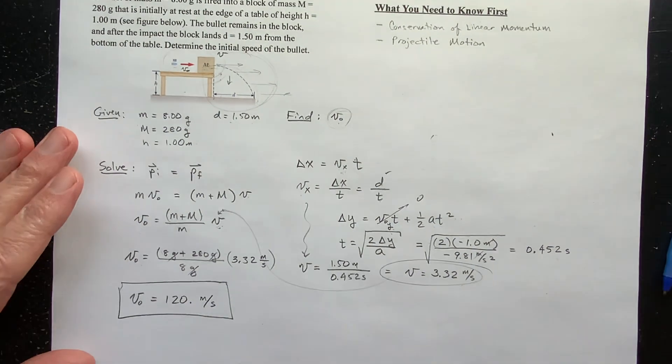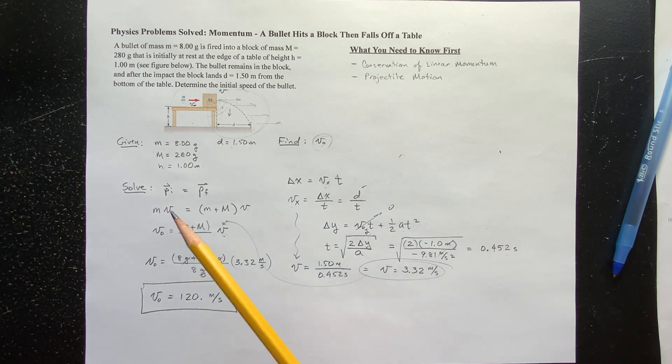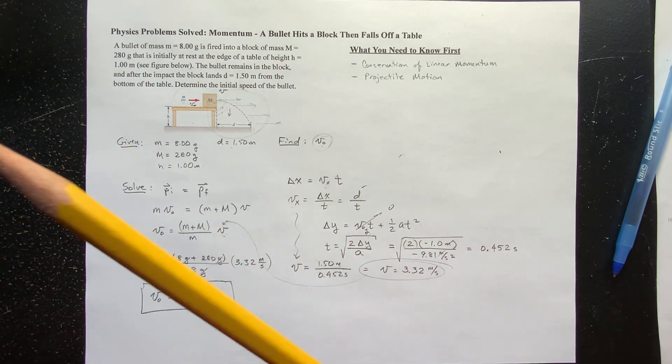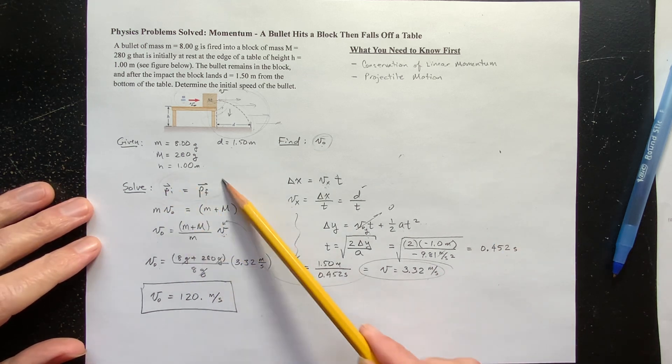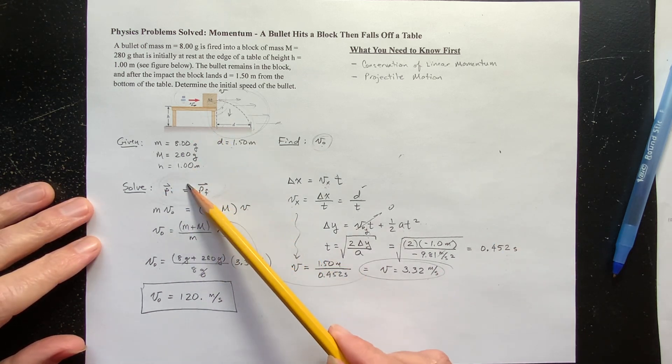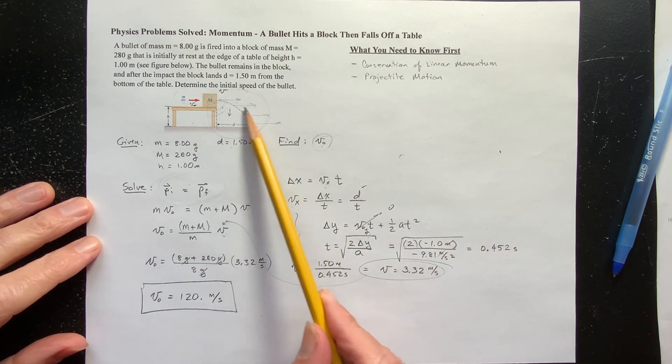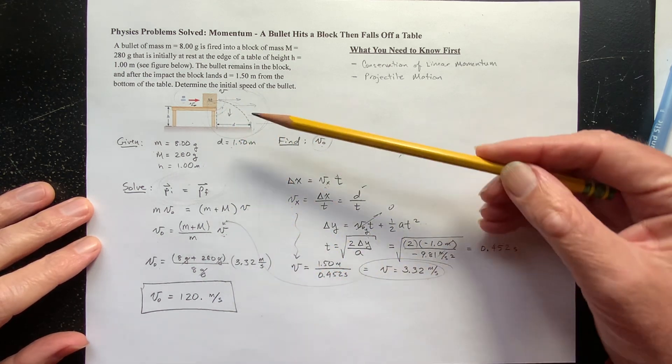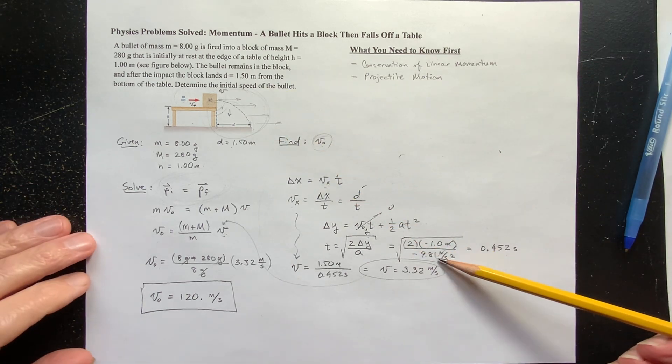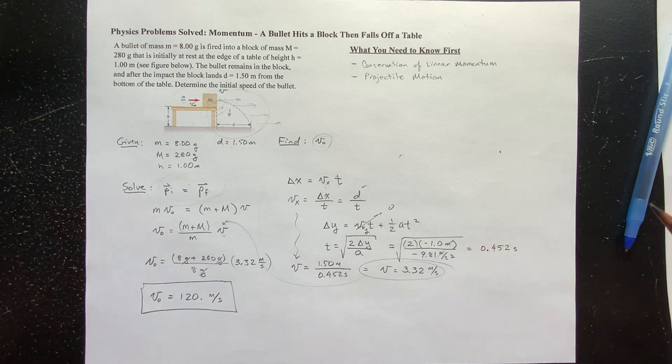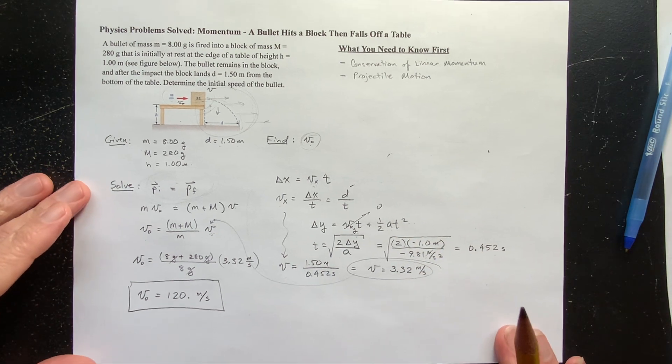So cool little problem. Not that hard, but it does involve two major concepts in mechanics: conservation of linear momentum during a collision and projectile motion, where the acceleration in the x direction, the horizontal direction, is zero, and the acceleration in the y direction is negative 9.8, that of gravity. And then just organize your work properly, and now comes the answer.